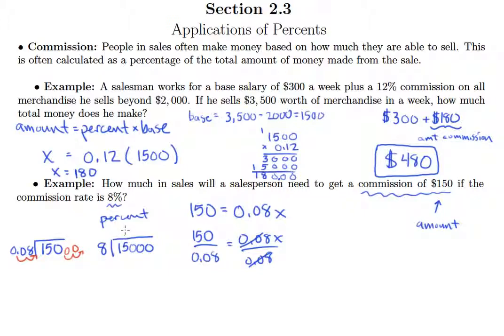So 8 goes into 15 just once. Drop down the 0 there. 8 goes into 70 8 times. So that's 64. And just about out of room. But thankfully, 8 goes into 40 exactly five times. So perfect.